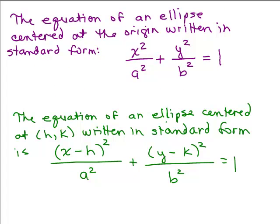In ellipses part one and two, we worked with ellipses centered at the origin and we came up with a standard form: x²/a² + y²/b² = 1. Now, if an ellipse is not centered at the origin but instead is centered at (h,k), then the equation written in standard form is (x-h)²/a² + (y-k)²/b² = 1.